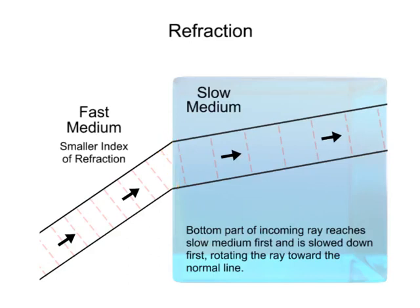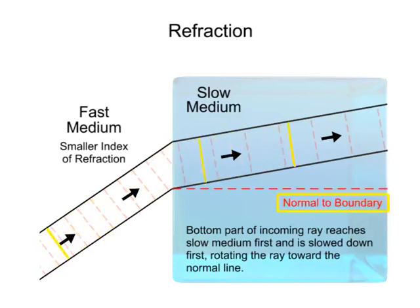This speed difference at the top and bottom aspects of the light path causes it to pivot, bending toward what is referred to as the normal. This is an imaginary line drawn perpendicularly to the surface of the material.